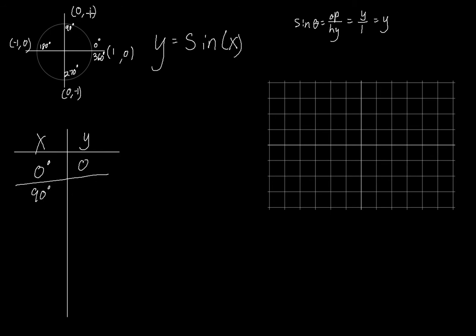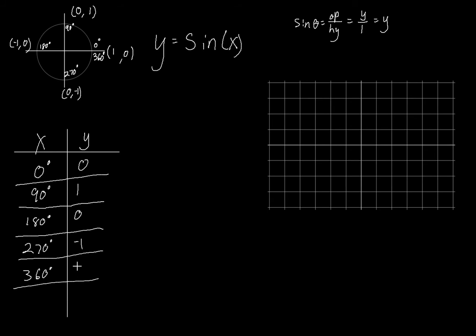At 90 degrees, the y coordinate is one. At 180 degrees, the y coordinate is zero. At 270 degrees, the y coordinate is negative one. At 360 degrees, the y coordinate is zero. Technically we could keep going — 450 degrees is coterminal to 90 degrees, so it has the same y value of one. We could keep going to 540 and beyond, but let's stop there since we have enough points.